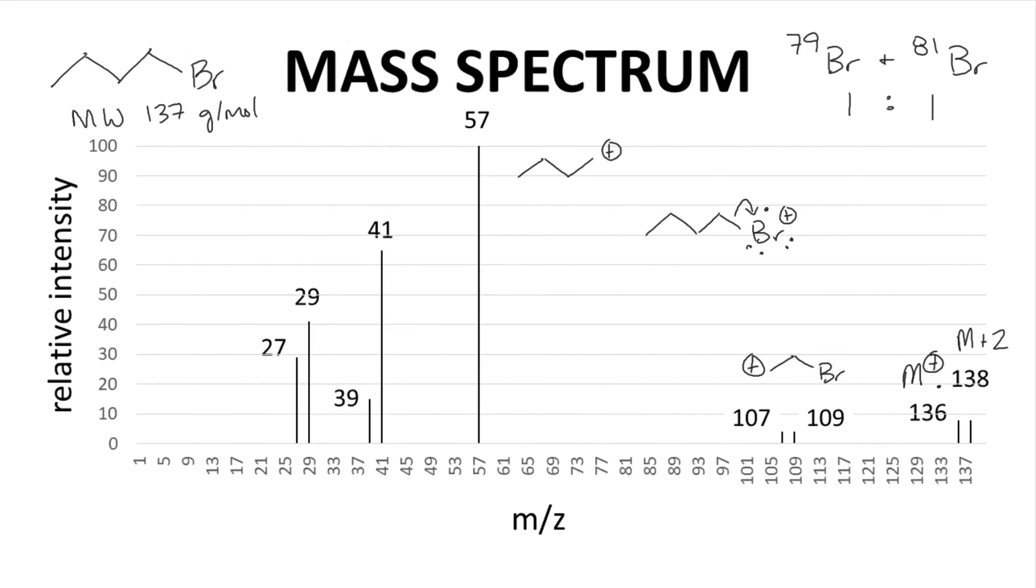The remaining fragments are more difficult to explain if you start with the radical on bromine. Again, that's okay. We frequently cannot easily explain all observed peaks in a mass spectrum. Fragmentation is a high energy process and not always readily predictable. Focus on what you can explain, not what you cannot explain.